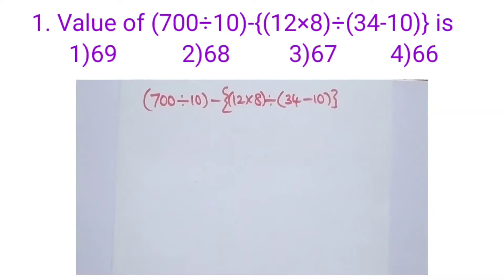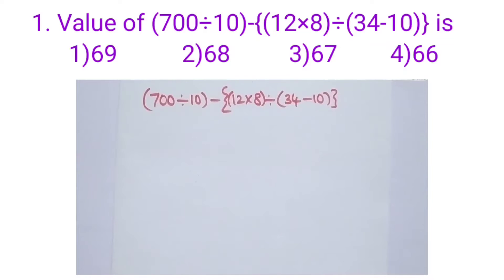Now, first problem. Find the value of 700 divided by 10 minus 12 into 8 divided by 34 minus 10 in brackets.